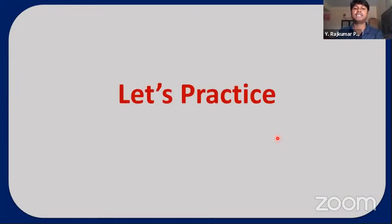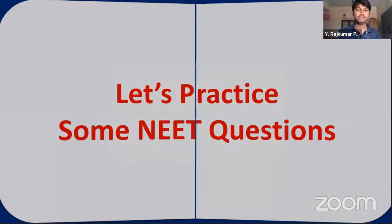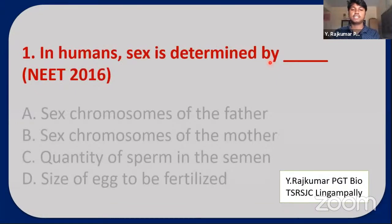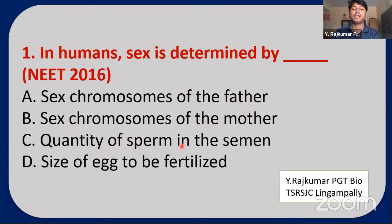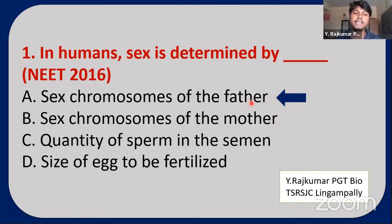Now let's practice NEET questions. Question: What determines the sex of a child? Options: sex chromosomes of father, sex chromosomes of mother, quantity of sperm in semen, or size of egg. The answer is sex chromosomes of father — the father has XY chromosomes, producing two types of gametes: a gamete with X chromosome produces a female child and a gamete with Y chromosome produces a male child.